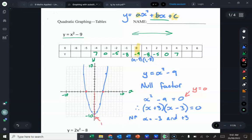It won't always be that simple. But in this case, it is because what I can do is I can just sub x equals zero in instead, and that will give me the y value.